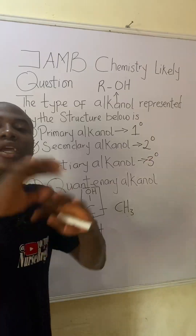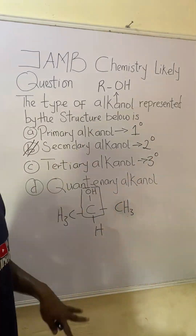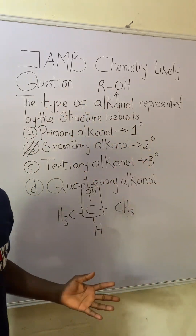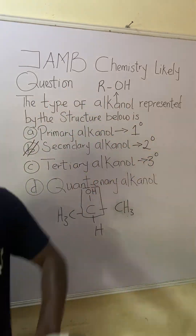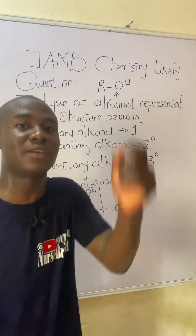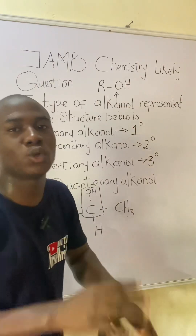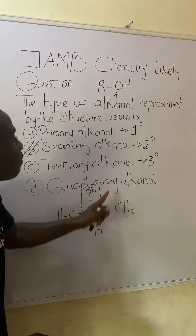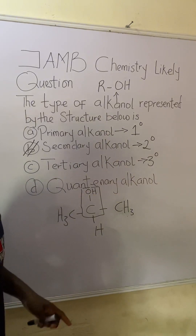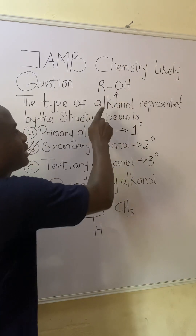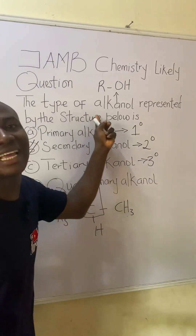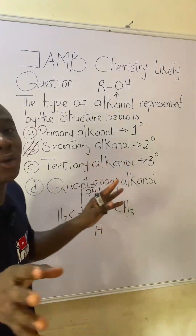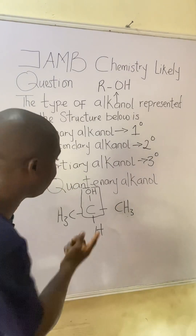It doesn't matter the type of compound they give you — once you understand how to identify primary, secondary, or tertiary alcanol, you can solve it. For quaternary, it would be four carbons directly attached to that carbon bearing the functional group. This applies to any organic compound family: alkanoic acids, alkanols, alkanones, ethers, or esters.